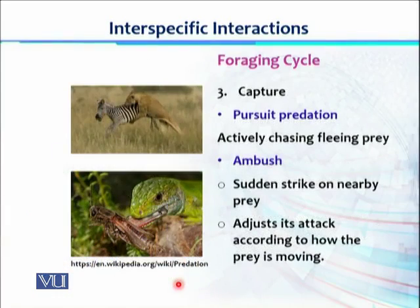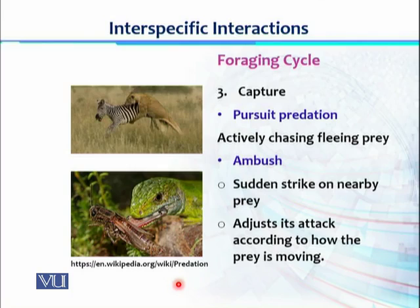After assessment, the next stage is capturing. Once the predator has assessed that the prey is suitable and should be killed, the first capturing strategy is pursuit predation. The prey also has its own defense strategies, so it cannot be easily captured. Once the predator attacks, the prey will run for its life and the predator will actively chase the fleeing prey. In this image, we can see a lion attacking a zebra — the zebra is fleeing and the lion is chasing it to eventually capture it.